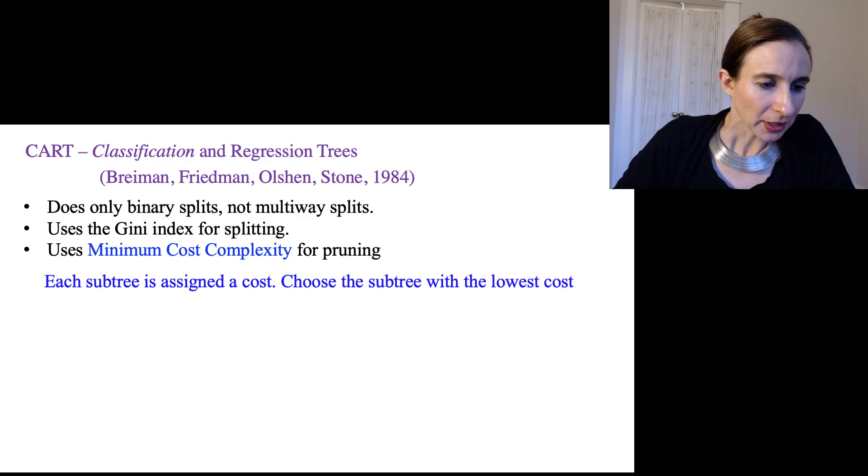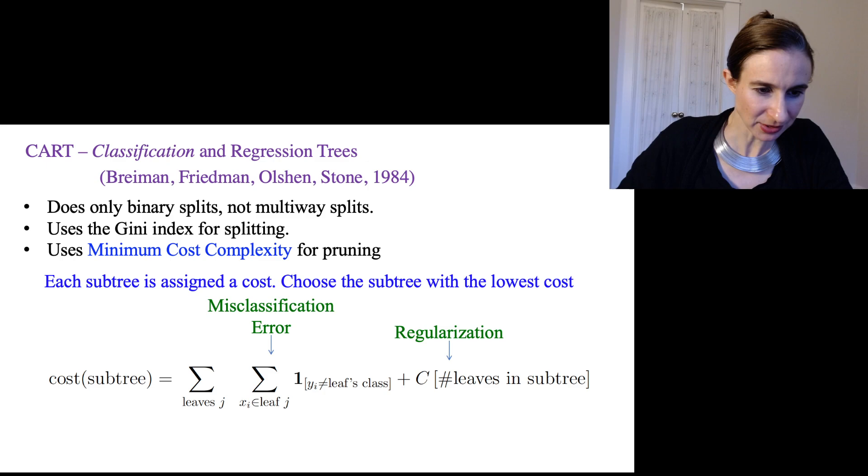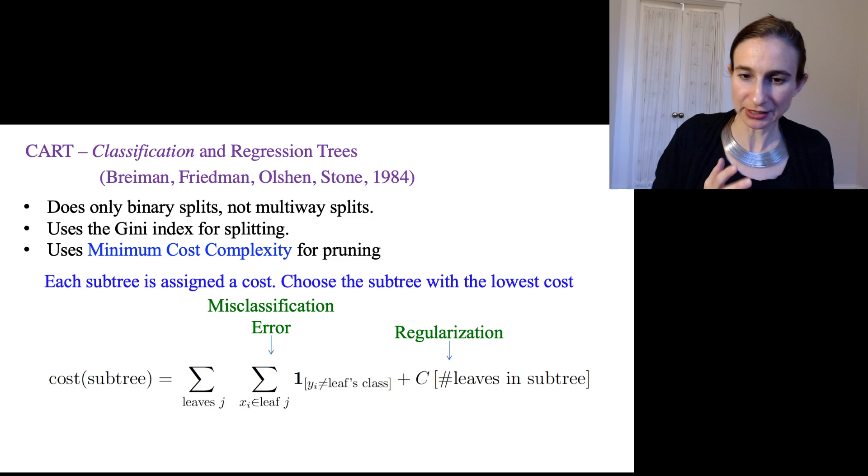So for the minimum cost complexity pruning, you assign each subtree a score. And that score looks like this. It's a linear combination of the misclassification error and the sparsity. So it's a regularized risk functional. It's balancing accuracy against sparsity. So this, to me, makes a ton of sense.